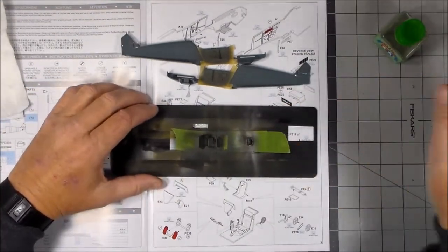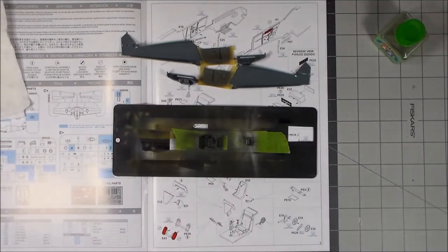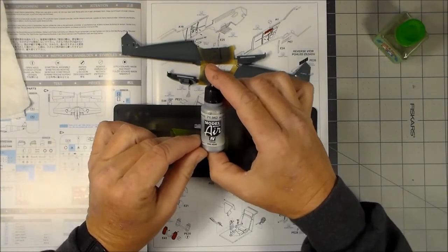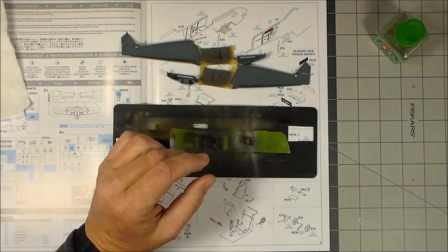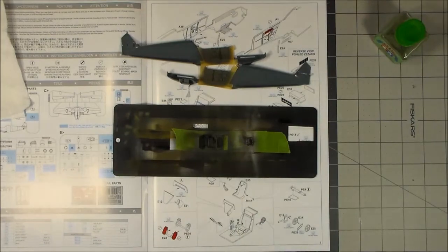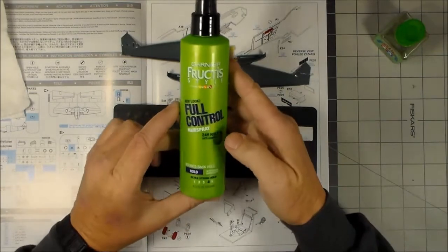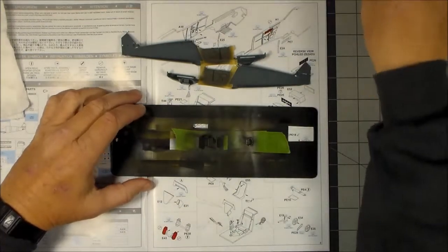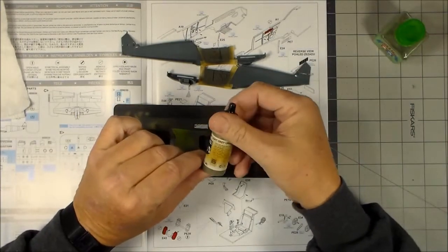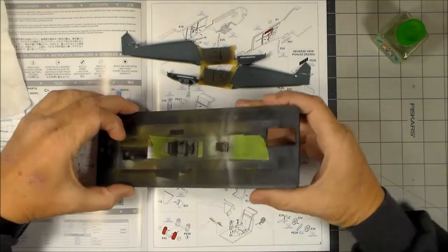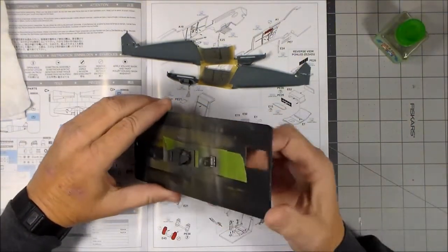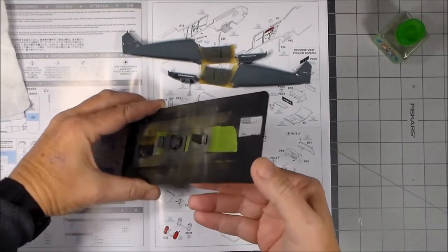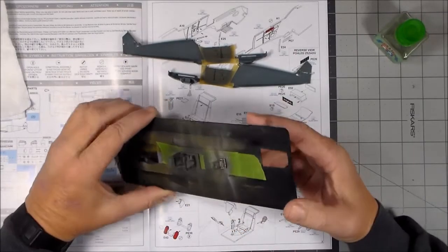Then I got the cockpit and the seat. On the seat, what I did is I sprayed it with the primer first, then I used the Vallejo Model Air aluminum on top of that, then I used this hairspray, and then I used the RLM 02 over that.